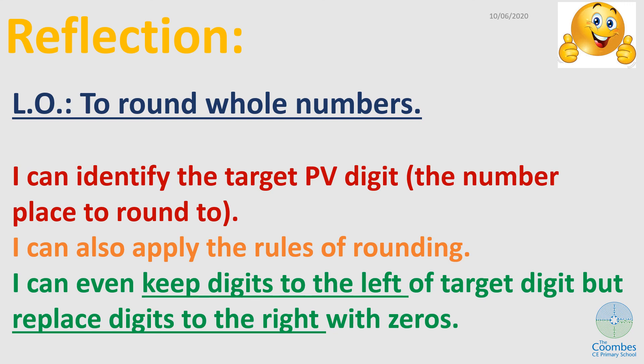Now, just as a reflection. Were you able to identify the target place value digits? Were you also able to apply the rules of rounding? Were you able to keep the digits to the left of the target and replace the rest with zeros? If you were able to do all that, well done. You can now round whole numbers.